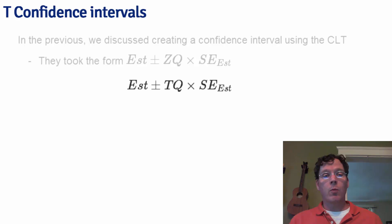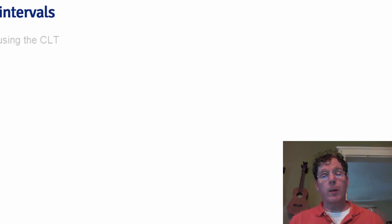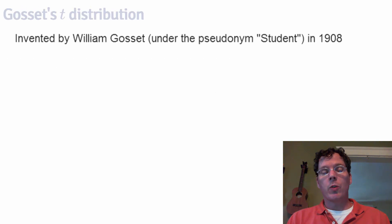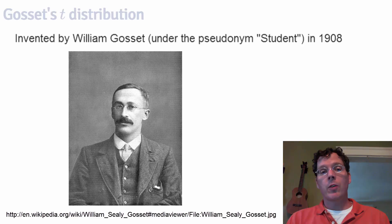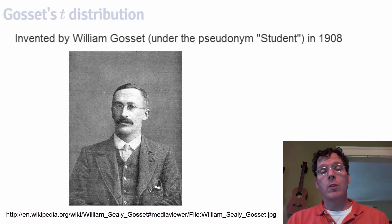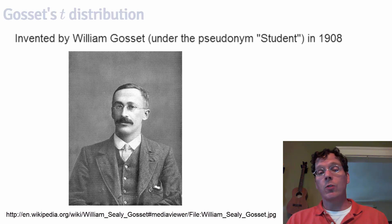We're just going to cover the single and two-group version of the t-interval. In our regression class, we'll cover some other t-intervals that come in handy as well. The t-distribution was invented by William Gossett under the pseudonym Student in 1908. He worked for the Guinness Brewery, and they didn't want him to publish under his real name, so he published under the pseudonym Student. So we're often talking about the Student's t-distribution or the Student's t-test.